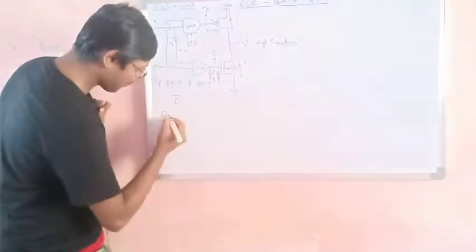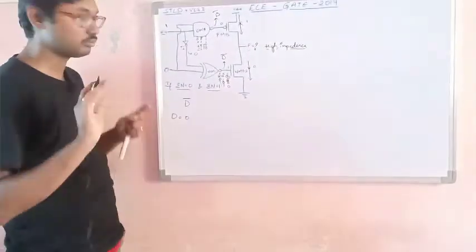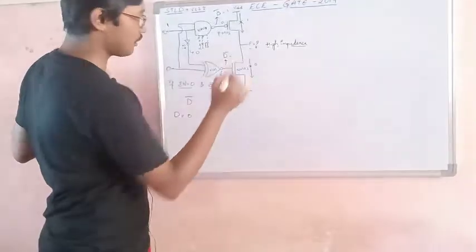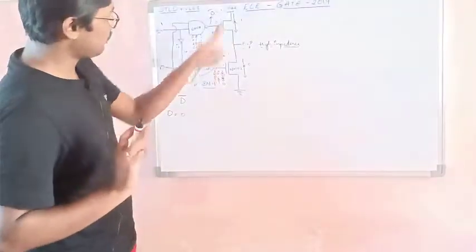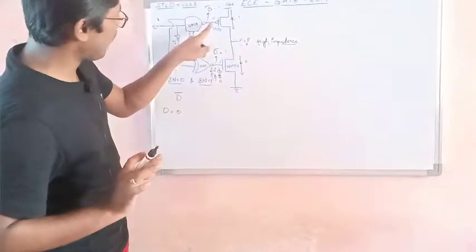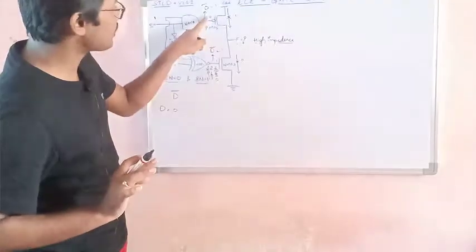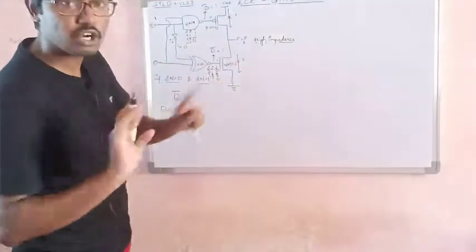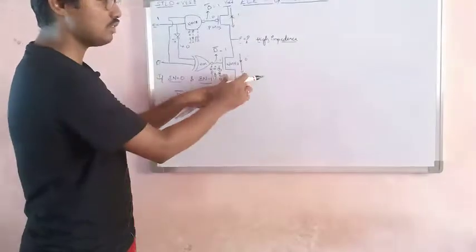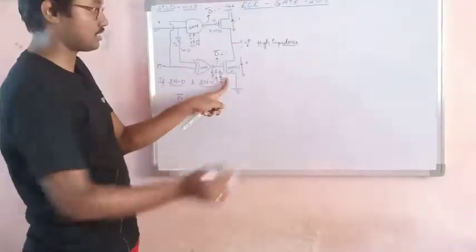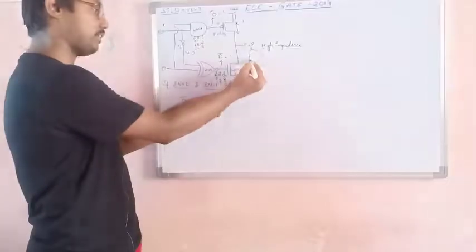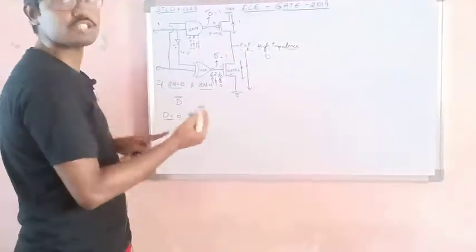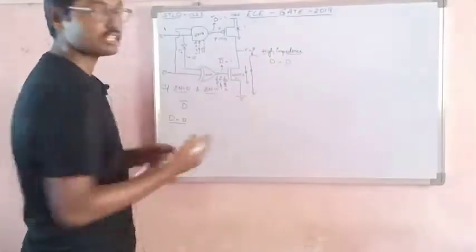If D equals 0: D-bar equals 1, PMOS is OFF, NMOS is ON. Since NMOS is ON, the value flows down to ground, so the output is 0. And 0 is nothing but your D value. So when EN equals 1 and D equals 0, the output equals D.